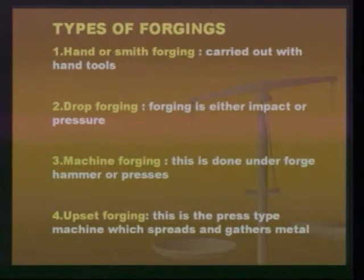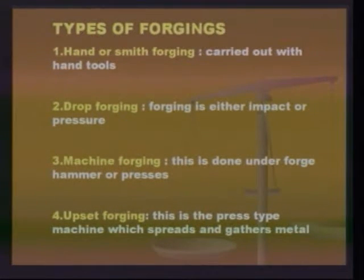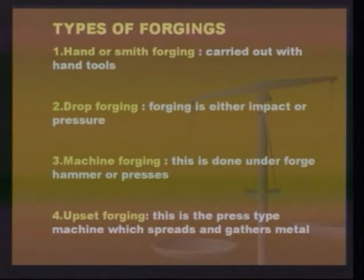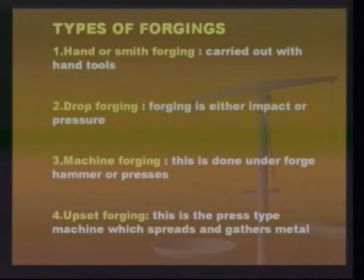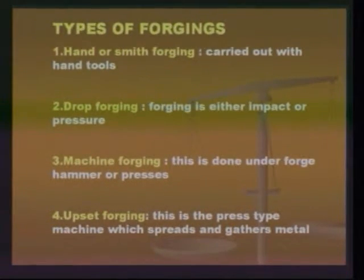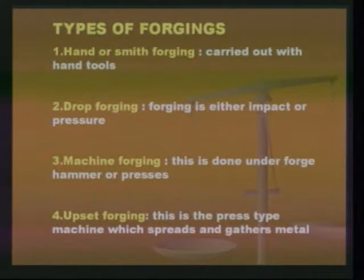There are different types of forging: hand forging, drop forging, machine forging, and upset forging. Hand forging is carried out purely with hand tools and depends upon the skill of the operator — it is also named as smithy forging. Drop forging involves forging by impact or by applying pressure. Machine forging is done under a forge hammer or presses. In upset forging, a press type machine spreads and gathers the metal for different forging operations.